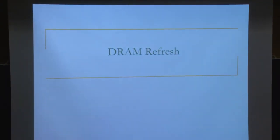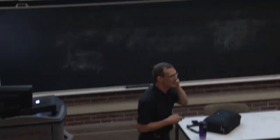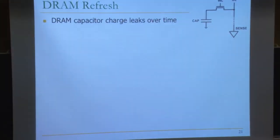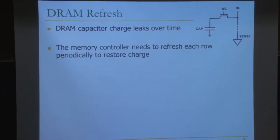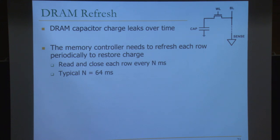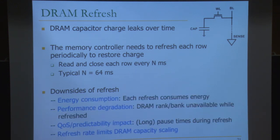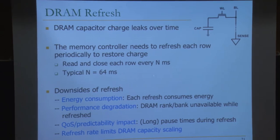We stopped at DRAM refresh. This is a unique property of DRAM — it's dynamic memory and we need to refresh it because the capacitor charge leaks over time. The memory controller needs to refresh each row periodically by activating and pre-charging it every 64 milliseconds. There are a lot of downsides: energy consumption — each refresh consumes energy on every row in memory. For a 32 gigabyte memory system with 8 kilobyte rows, that's 2^35 / 2^13 = 2^22, or about 4 million rows refreshed every 64 milliseconds.